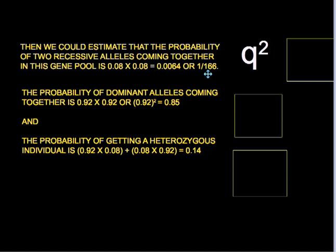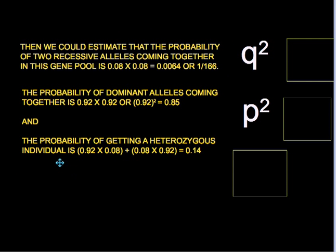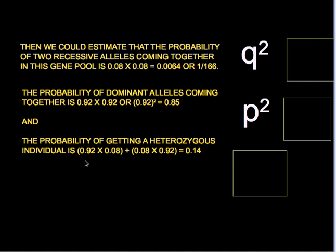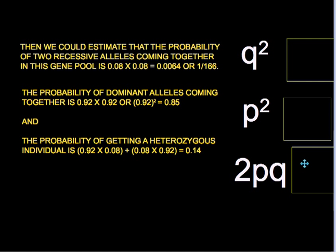This explains why after several years no one ever saw an albino squirrel. The probability of two dominant alleles coming together is 0.92 times 0.92, or about 0.85 — that is p squared. The heterozygous genotype arises when one big P combines with a little p, or vice versa — two distinct ways — so its frequency is calculated as 0.92 times 0.08 plus 0.08 times 0.92, coming to 0.14. We refer to that as 2pq.